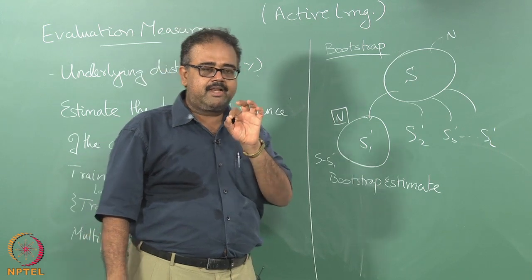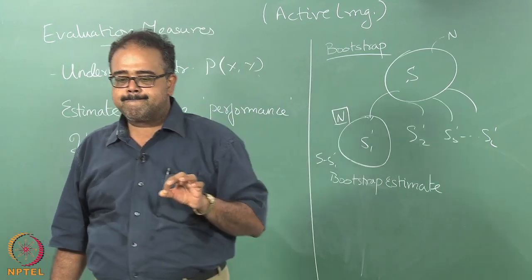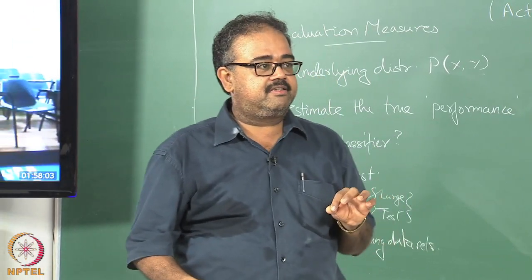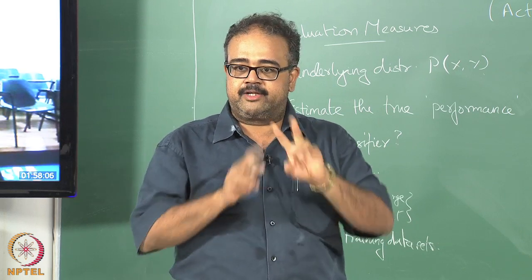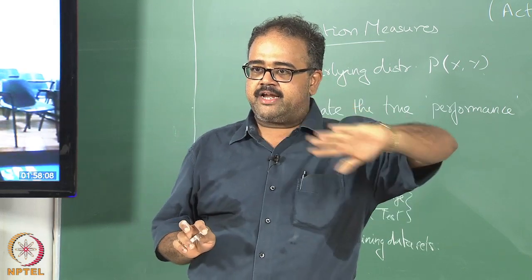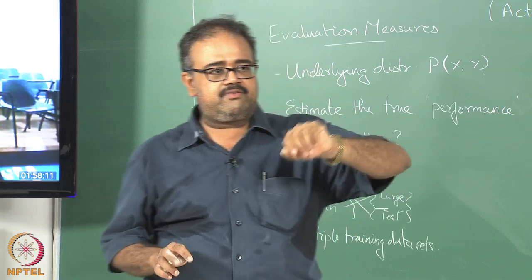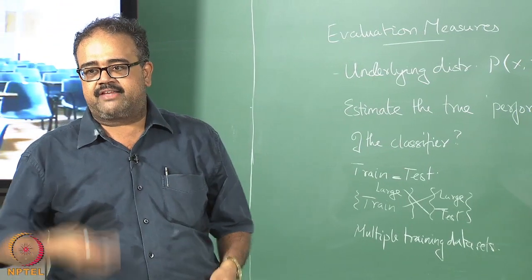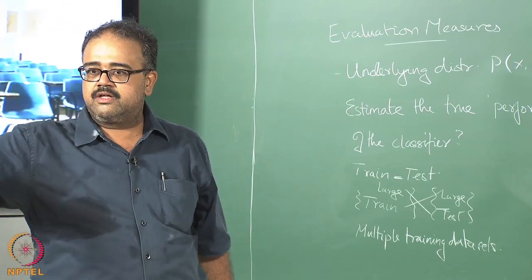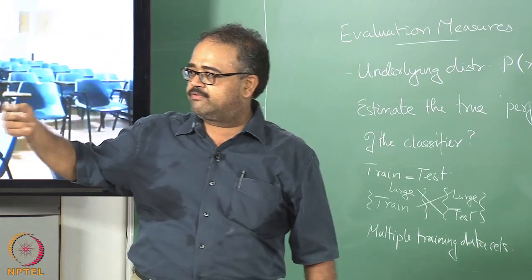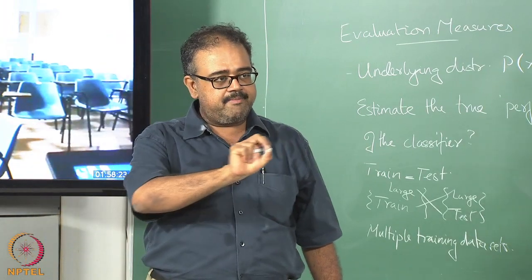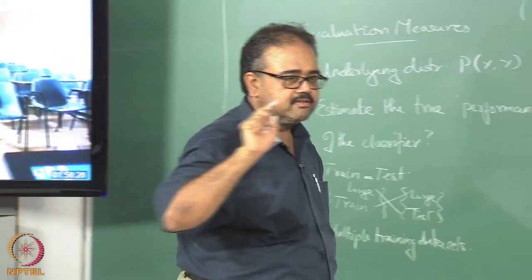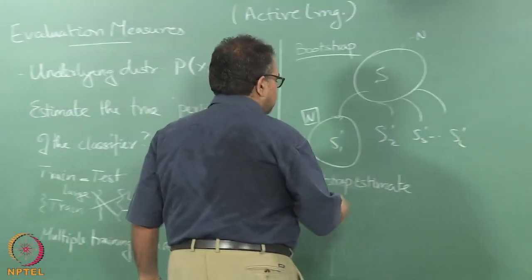What do I mean by lower variance here? If you have another training dataset of size N and do two estimates — one by training on the original set and testing on the test set, and another using the bootstrap estimate — the bootstrap estimate will be more consistent than the single split estimate. That is what I mean by lower variance.